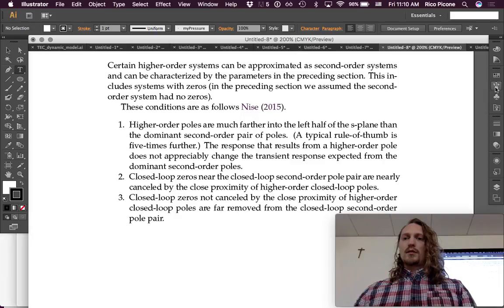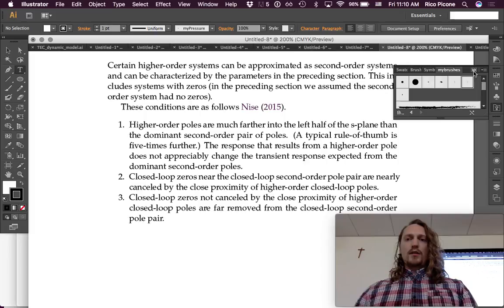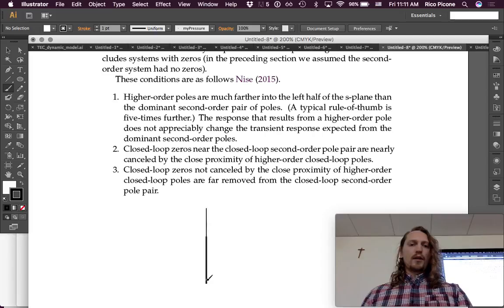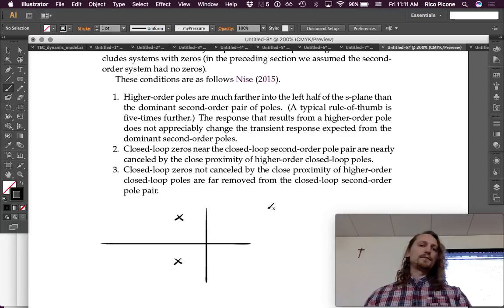if I was to draw that, that would look like this. So, if you had some dominant pair of poles here, like here. They're dominant because they satisfy this condition.